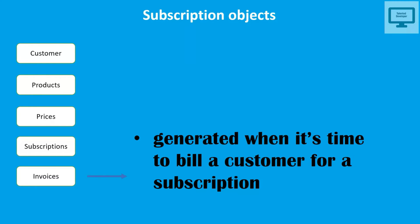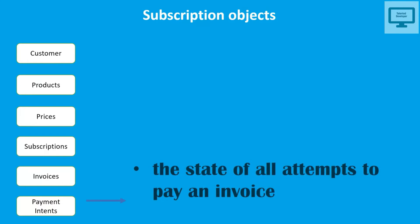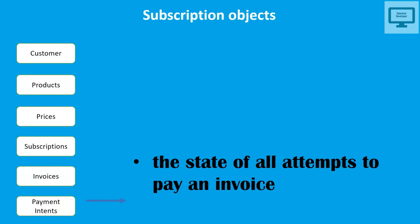Next is the invoice. An invoice is generated when it's time to bill a customer for their subscription. It can contain a list of items, tax rate, and the total amount owed. I'll cover invoices in detail in the next video. Finally, payment intent represents all the attempts made by a customer to pay the invoice — also covered in another video. These are the subscription objects required to start a subscription.